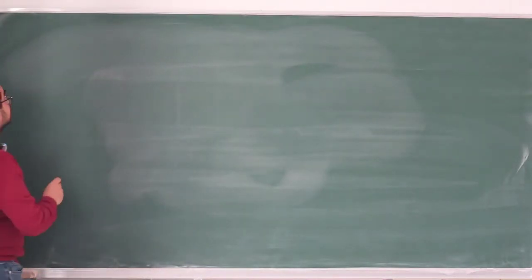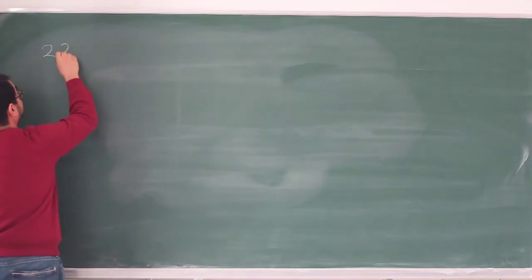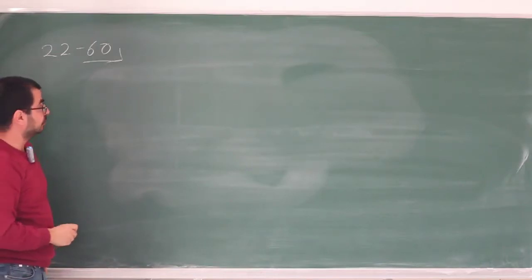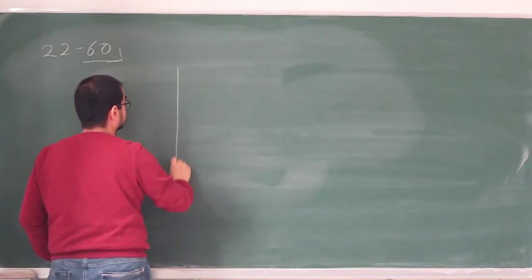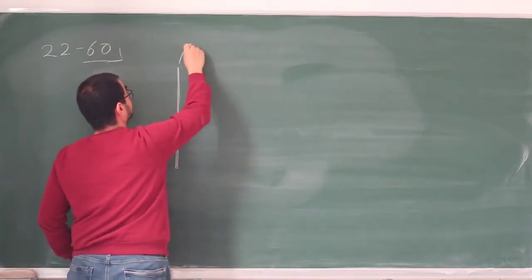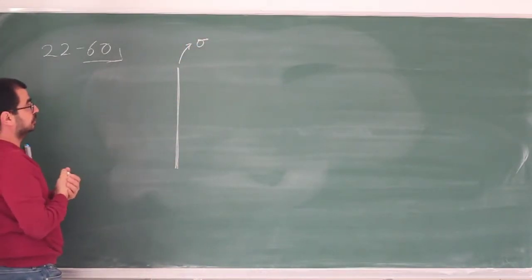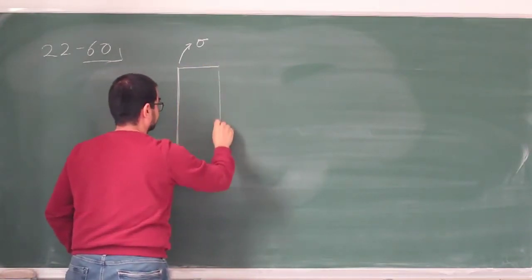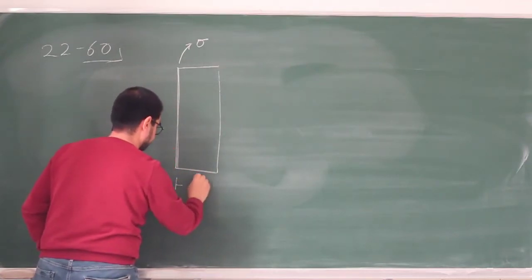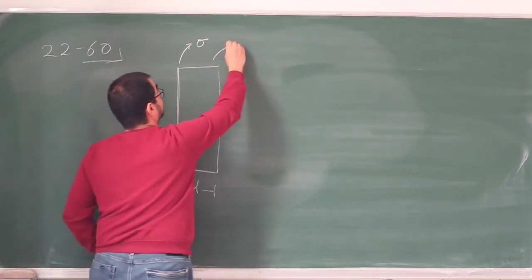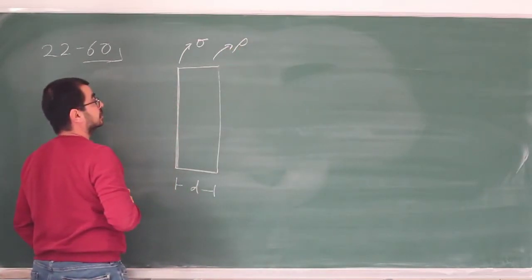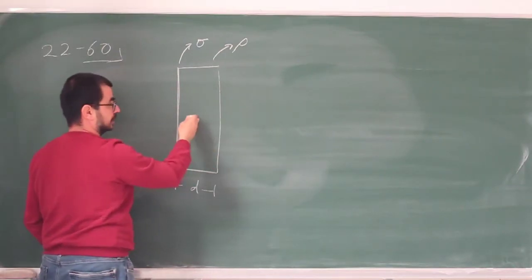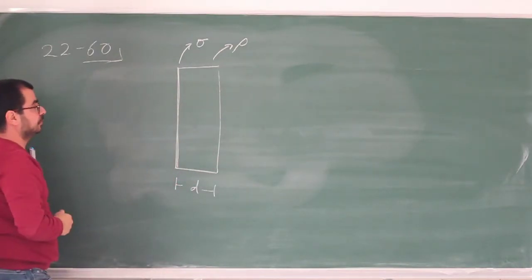The next problem I want to look at is Problem 60 from Chapter 22. We are given some charge configuration that consists of a thin plane of charge with surface charge density sigma — a very large plate of charge, seen from the side. Next to it, attached to this, is a slab of charge with thickness D and charge density rho. We are asked for the electric field to the left of the plane, to the right of the slab, and inside the slab — three regions.